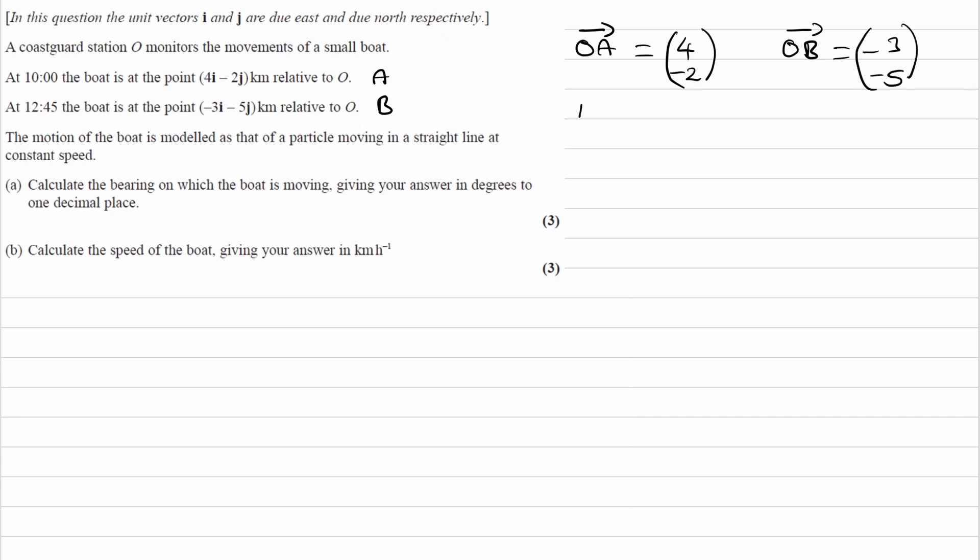If we work out what AB is, AB is the vector that takes us from A to B. Then if we work out the direction of AB, we can work out the angle that AB makes to the north line. When working out a bearing, remember we're trying to work out the angle clockwise from north.